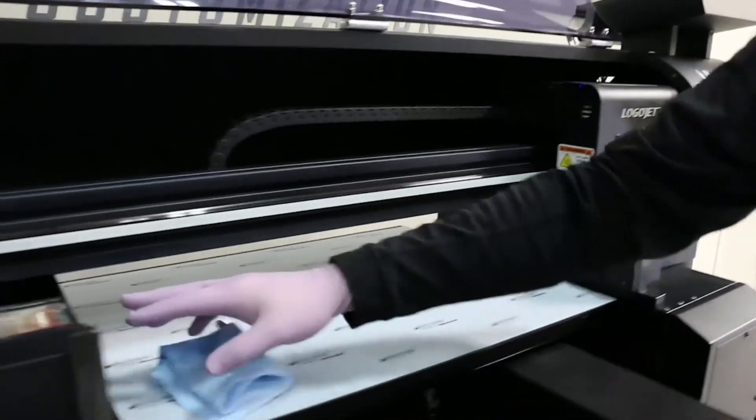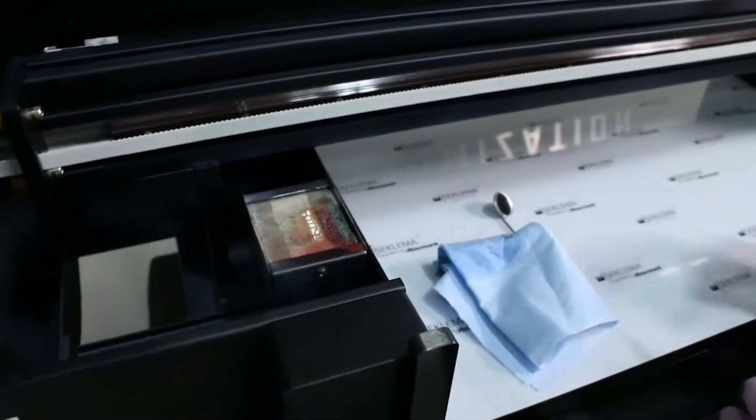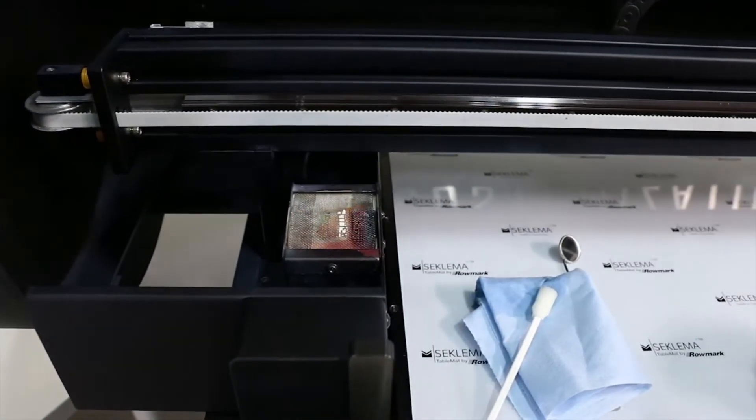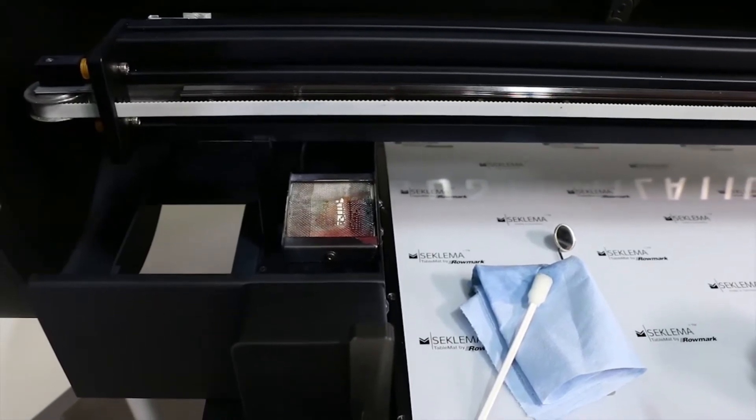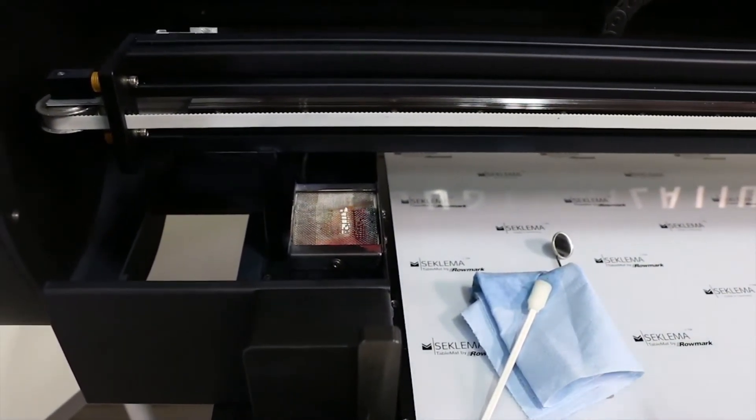We're going to inspect our waste bucket here to see if it has any standing ink in it. If it does, the best way to clean this is to unmount it, turn it upside down in a funnel over a collection container, and just let it drain overnight. And you want to always make sure you put that back in place before you turn the printer back on.